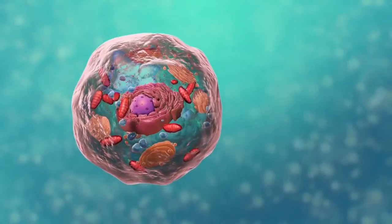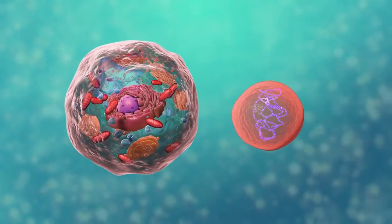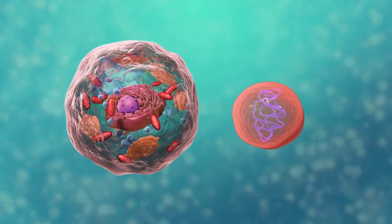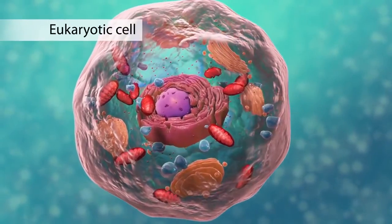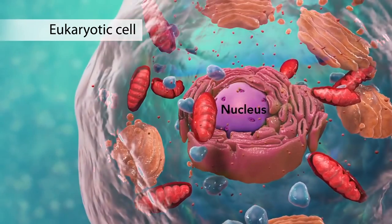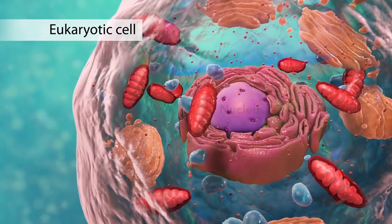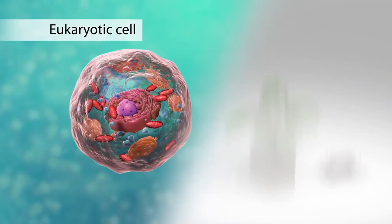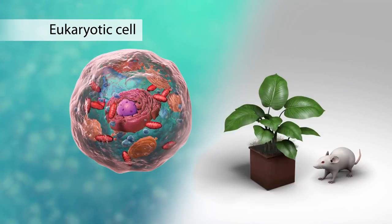There are two broad categories of cells. The first category is eukaryotic cells. They have organelles which include the nucleus and other special parts. Eukaryotic cells are more advanced complex cells such as those found in plants and animals.